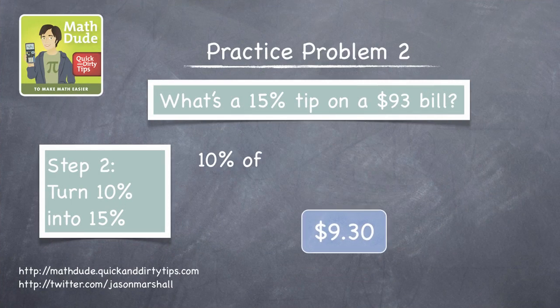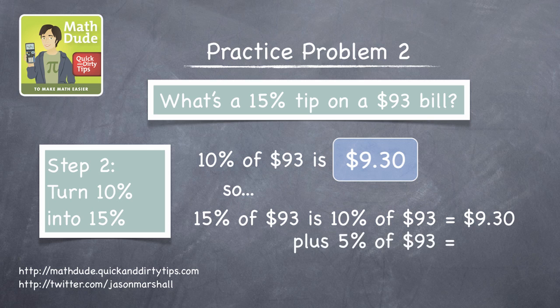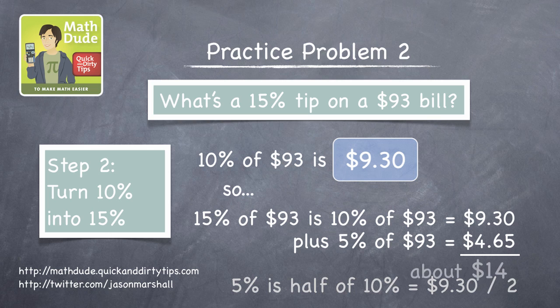Now that we know 10%, we can find 5% by taking half of 10%, which is $4.65. So the total is $13.95, which is pretty close to $14.